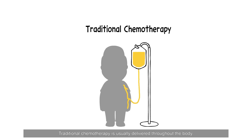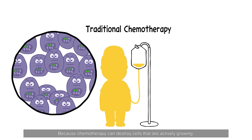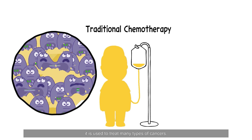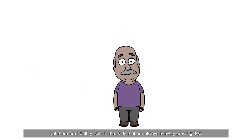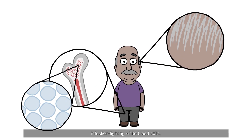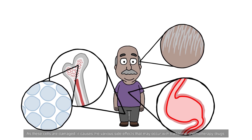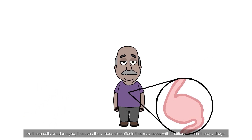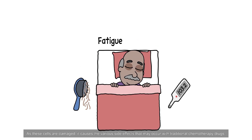Traditional chemotherapy is usually delivered throughout the body. Because chemotherapy can destroy cells that are actively growing, it is used to treat many types of cancers. But there are healthy cells in the body that are always actively growing too, like the cells that make up hair follicles, infection-fighting white blood cells, and cells lining the digestive tract. As these cells are damaged, it causes the various side effects that may occur with traditional chemotherapy drugs.